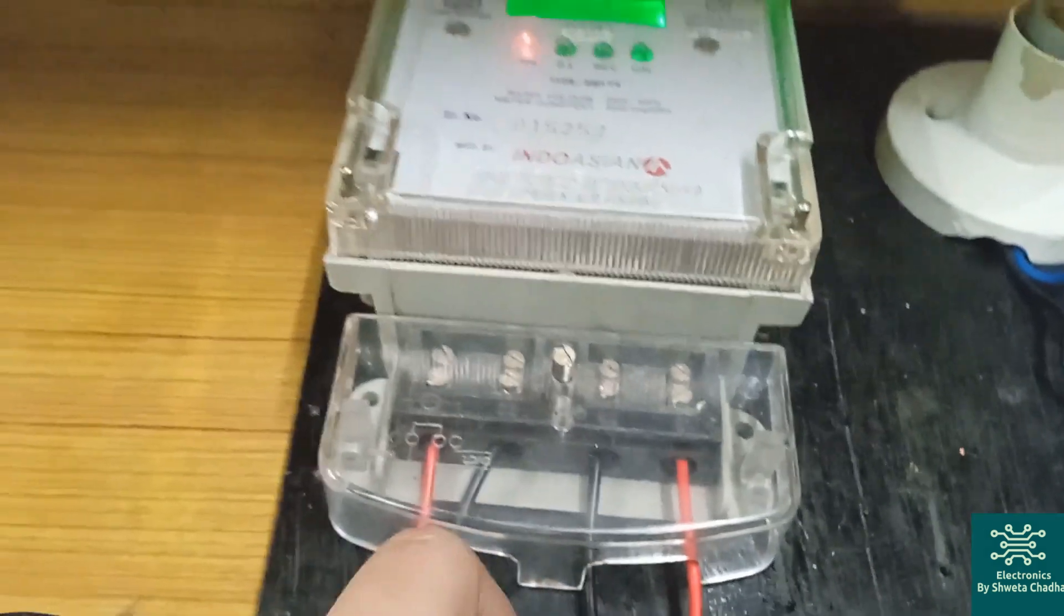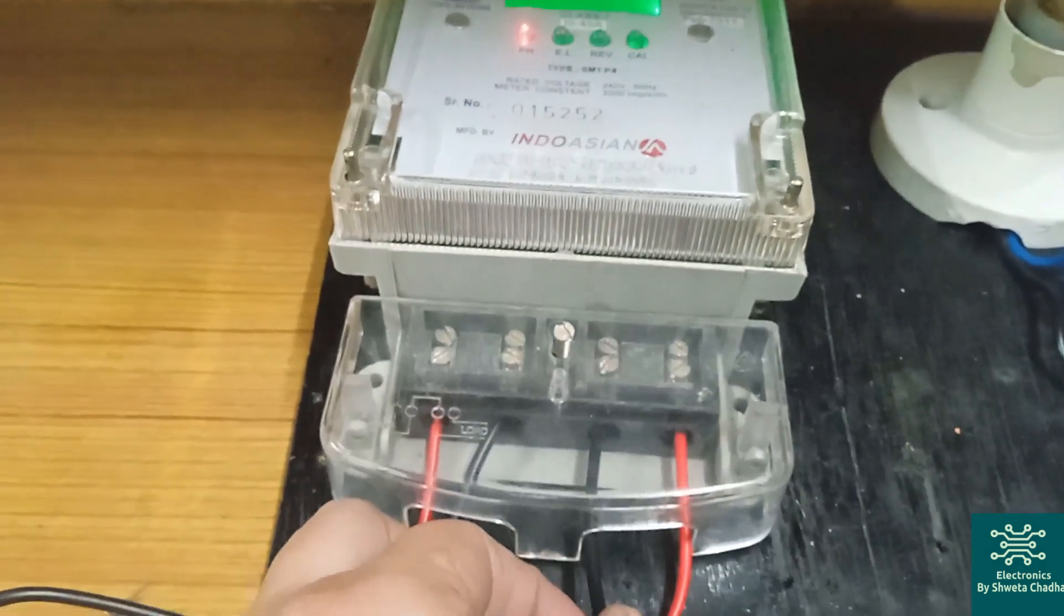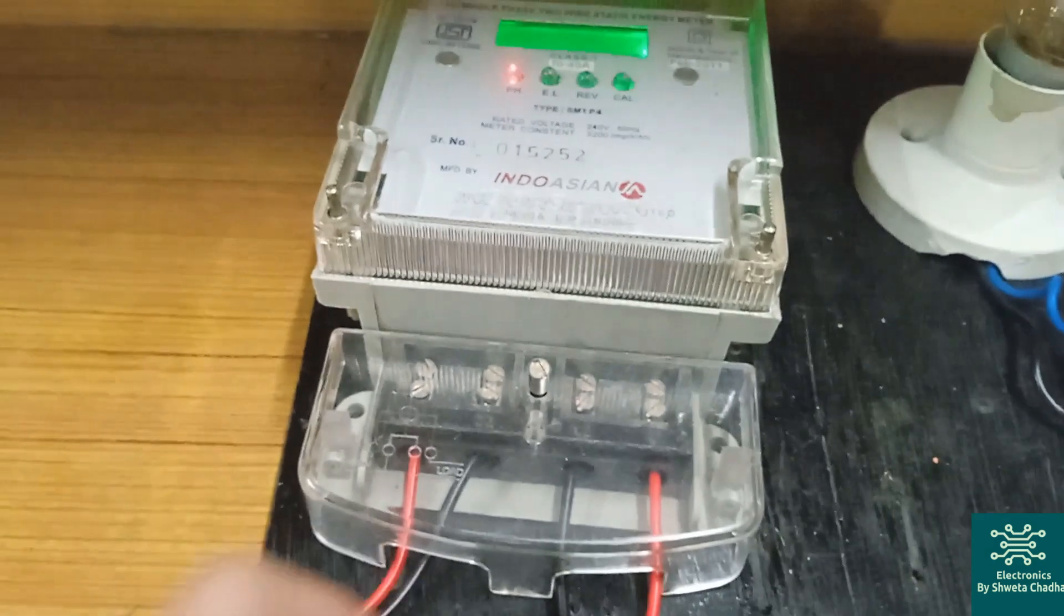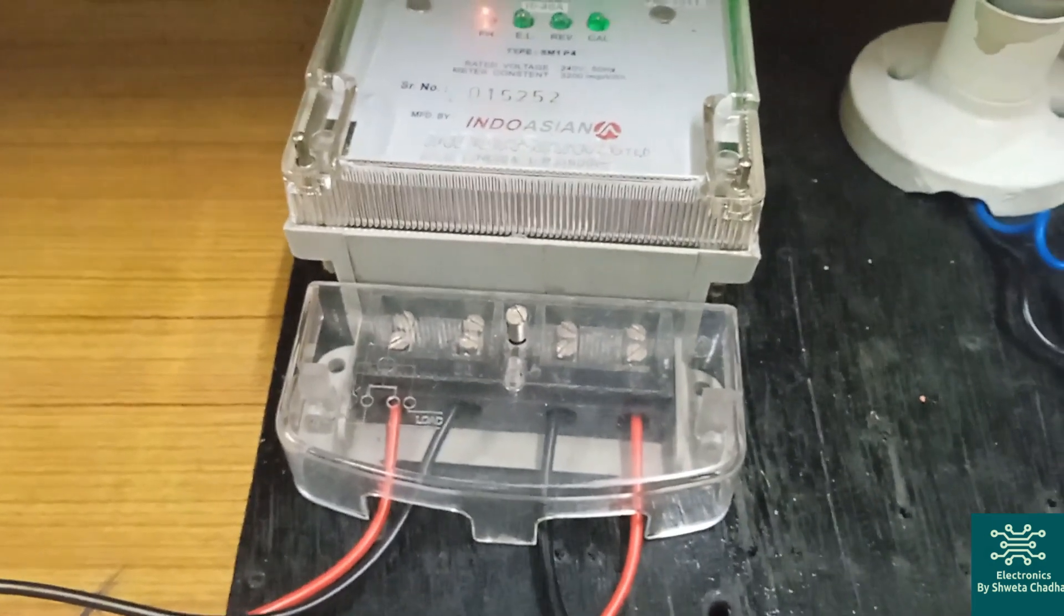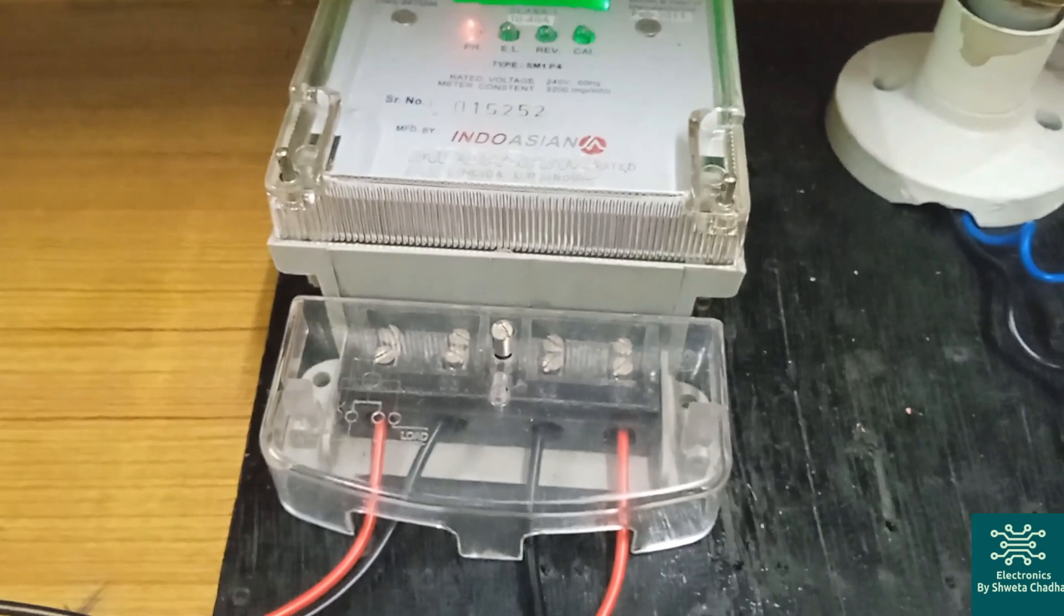And the other one, this black one, is your neutral wire. All the main connections will be done in the phase wire itself. So now let us see about the connections.